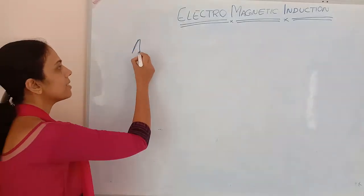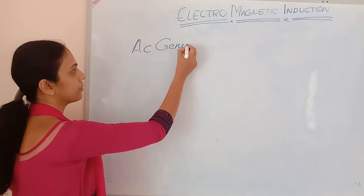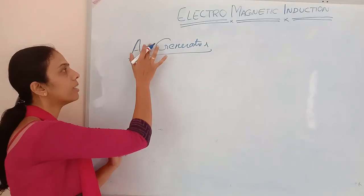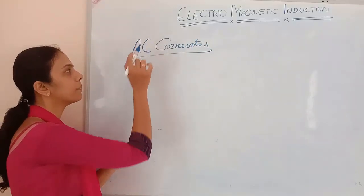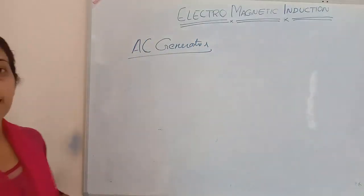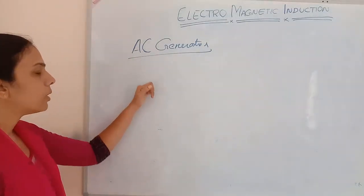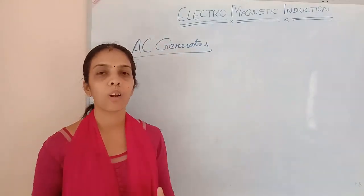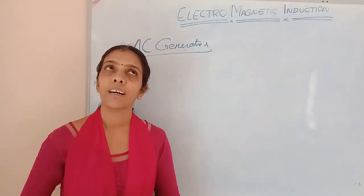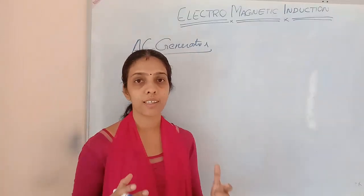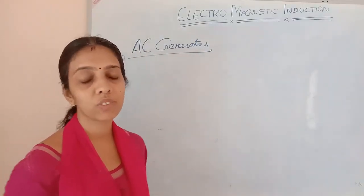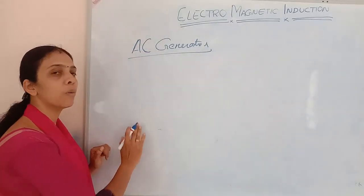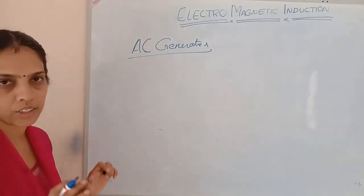So it is the AC generator. How can we explain the working of an AC generator? A small discussion about how the AC generator works — you would have learned in your 10th standard: what a generator is, what the parts of a generator are. Today we are going to continue with that and look at the proper theory behind the AC generator.